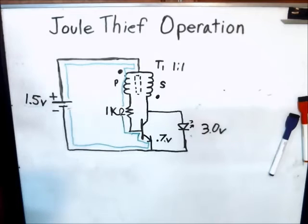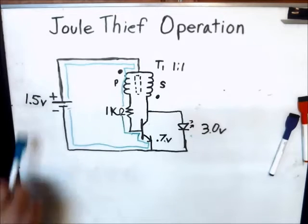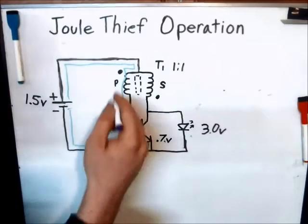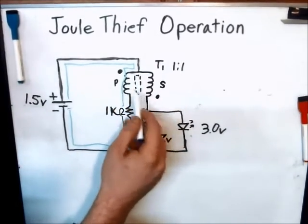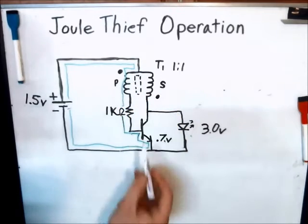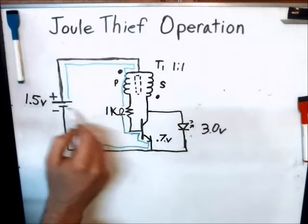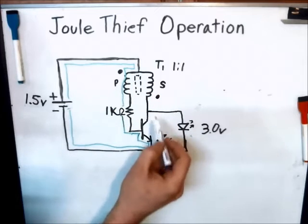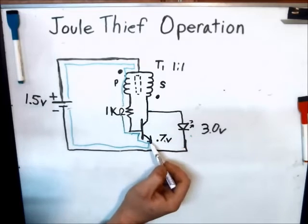When that occurs there's a slight delay because of the hysteresis of the iron core within the transformer here, but shortly thereafter opening this base junction here, the collector-emitter junction would be open.